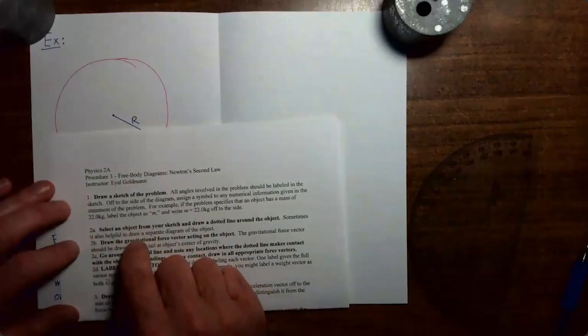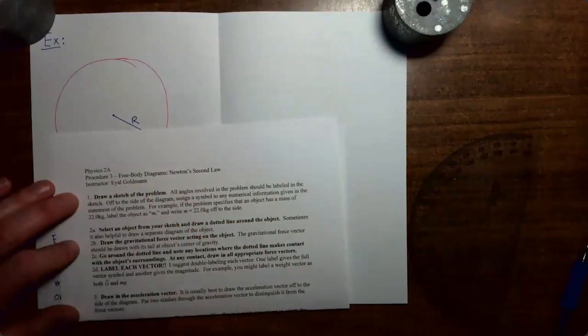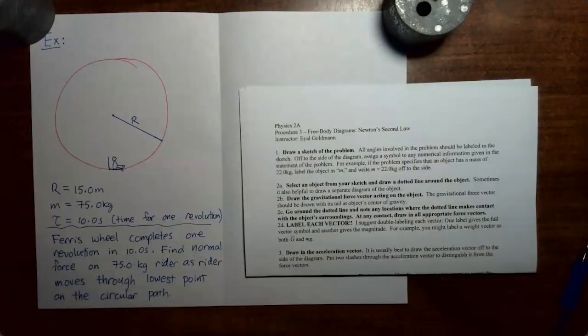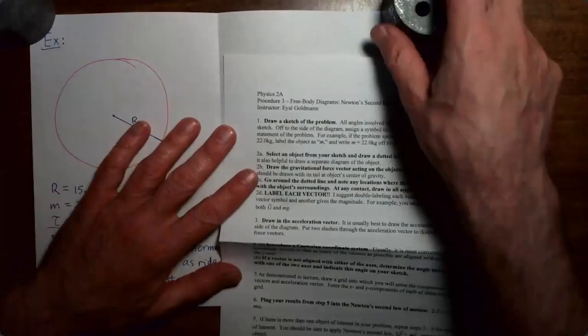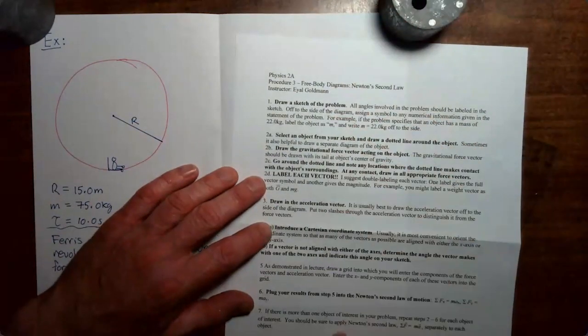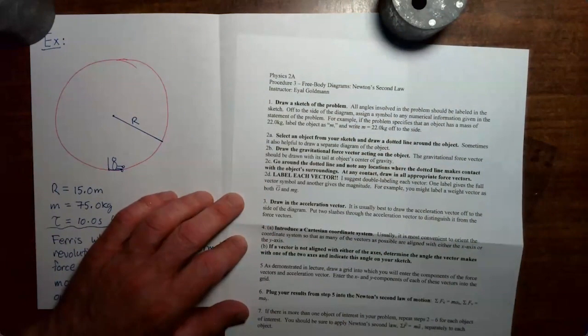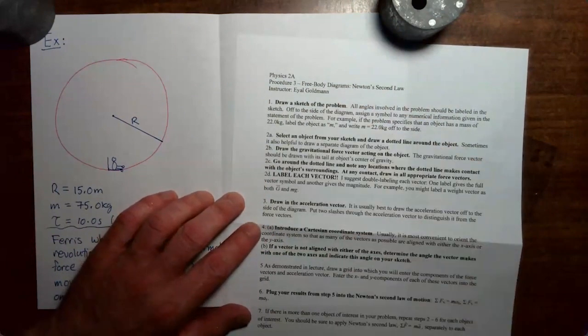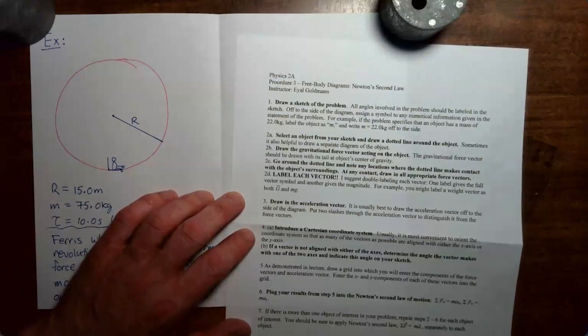We're going to do this problem using procedure 3 for Newton's second law. At this point in the course, I'm assuming that you're familiar with the handout. So although I'm going to be following all of the steps on the handout, I won't necessarily reference the handout each time because I'm assuming that at this point you're familiar and have the idea of how this goes.